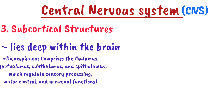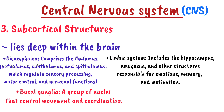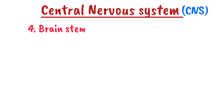Number three is the subcortical structures. These structures lie deep within the brain and include the diencephalon, which comprises the thalamus, hypothalamus, subthalamus, and epithalamus — regulating sensory processing, motor control, and hormone functions. Another is the basal ganglia, a group of nuclei that controls movement and coordination. Then the limbic system, which includes the hippocampus and other structures responsible for emotions, memory, and motivation.